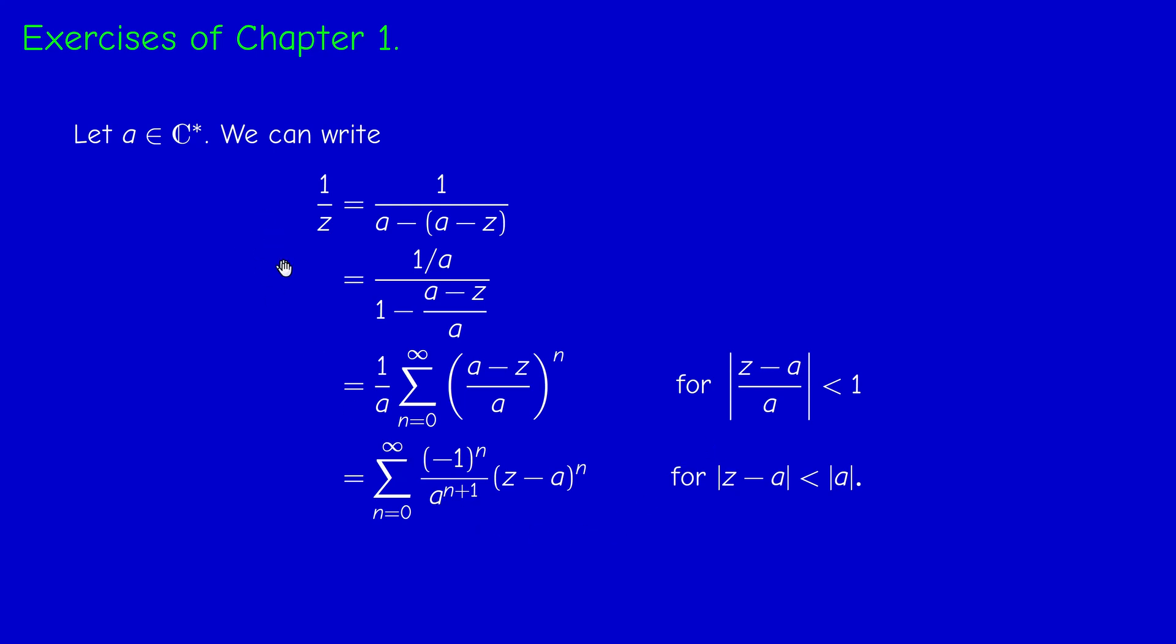So we proved that 1 over z is analytic at a for every a in C star. So 1 over z is analytic on C star. So this concludes the first exercise.